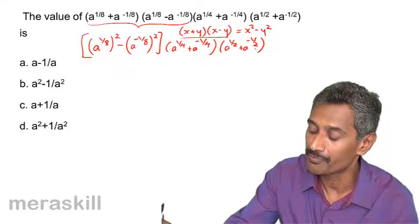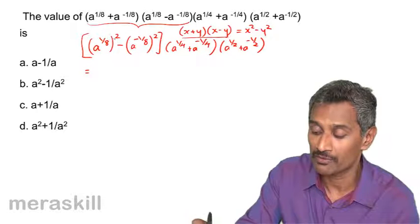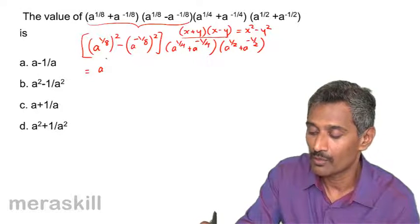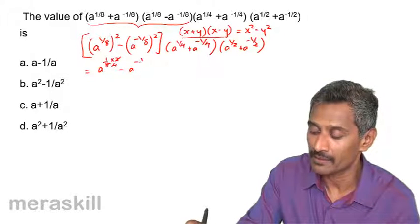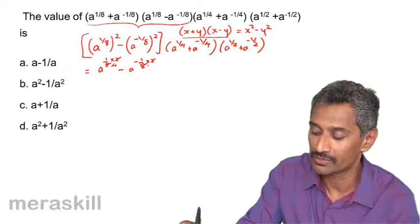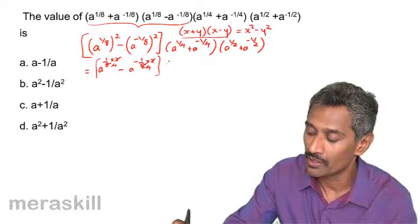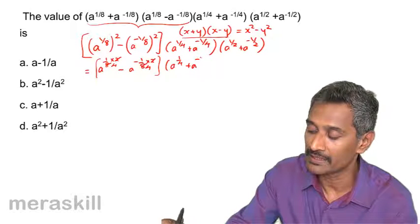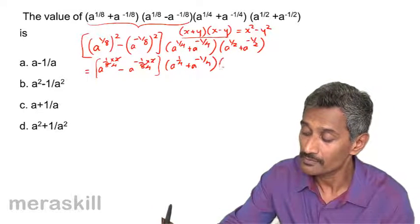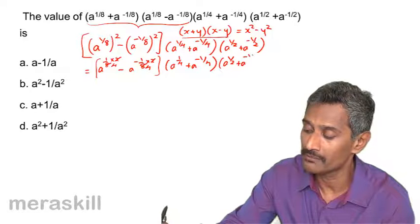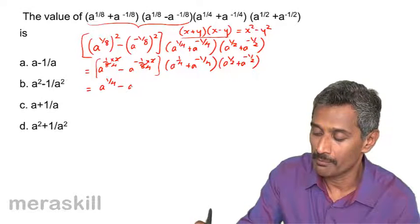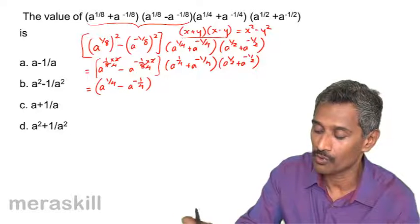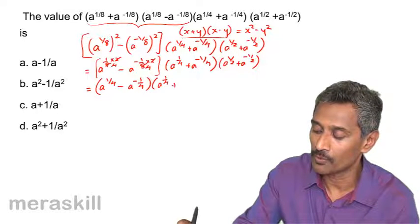Using the power of power rule, a raised to 1/8 into 2 becomes 1/4, and a raised to minus 1/8 into 2 becomes minus 1/4. So we get a raised to 1/4 minus a raised to minus 1/4, into a raised to 1/4 plus a raised to minus 1/4. The last two brackets we keep copying for further use.